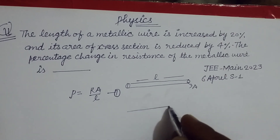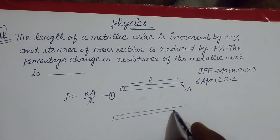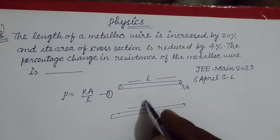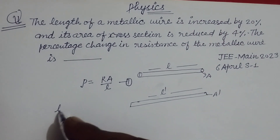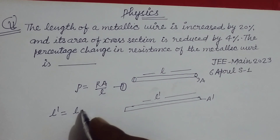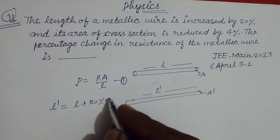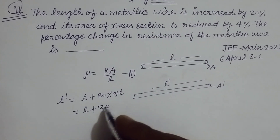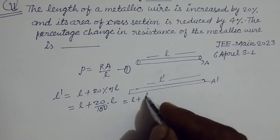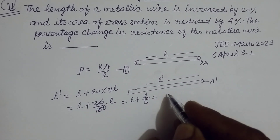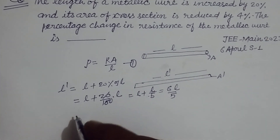In the second condition, its length is increased. Let the new length be L'. So L' equals L plus 20% of L, which is L plus 20 upon 100 into L, giving us 6L by 5, or 1.2L.